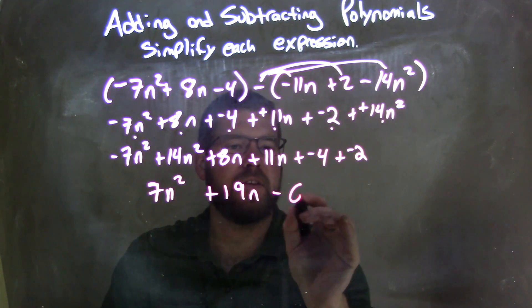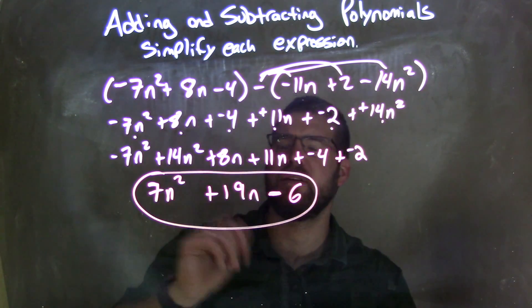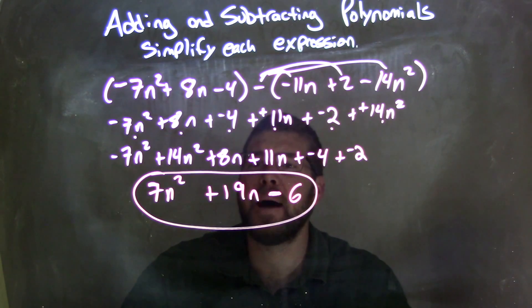And then negative 4 plus a negative 2 is negative 6, so we have subtracting 6 here. And there we have it. Our final answer being 7n squared plus 19n minus 6.